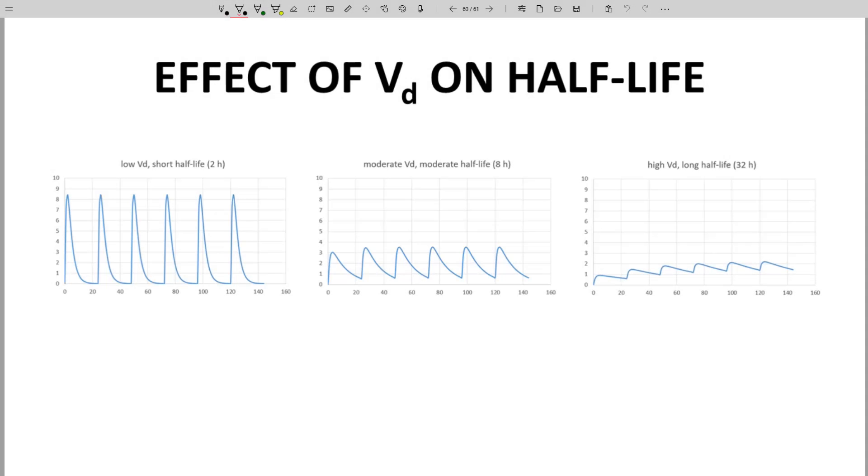Below are three CP time curves for drugs with half-lives of 2 hours, 8 hours, and 32 hours. The half-lives are changing because VD is changing.